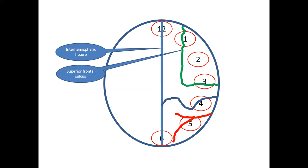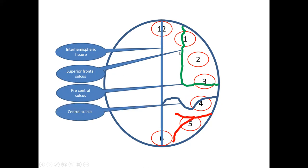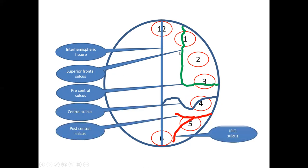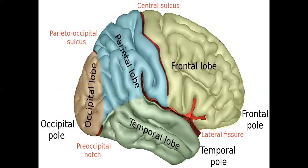So from the axial view: interhemispheric sulcus, superior frontal sulcus, precentral sulcus, central sulcus, postcentral sulcus, and intraparietal sulcus. You can see the frontal lobe here and the parietal lobe here. The central sulcus divides the parietal lobe from the frontal lobe.